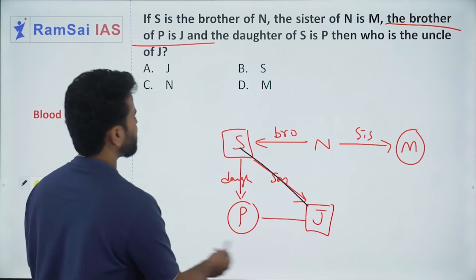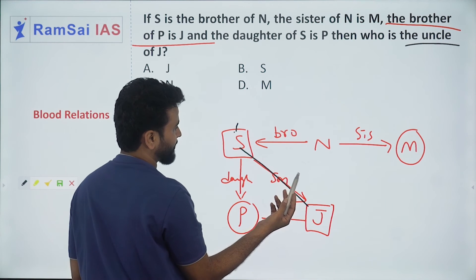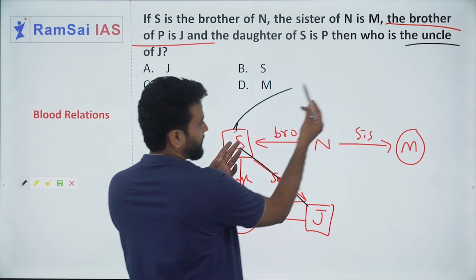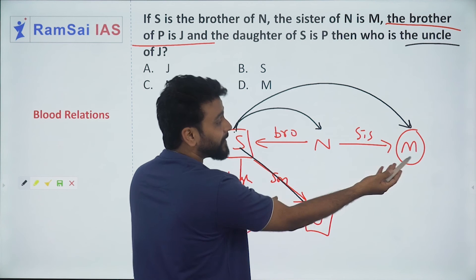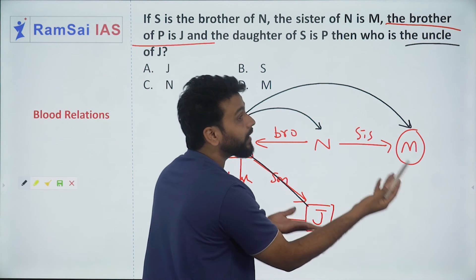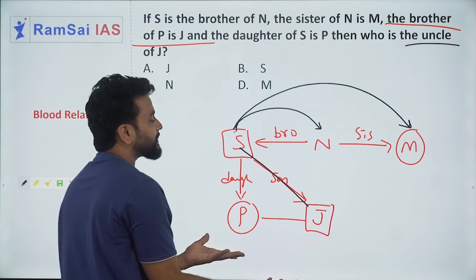So here, uncle in the sense means father's brother. But who is father's brother here? It can be M or it can be N. But M is a female. Female can be aunt but not uncle. And here, you do not know what is the gender of N.